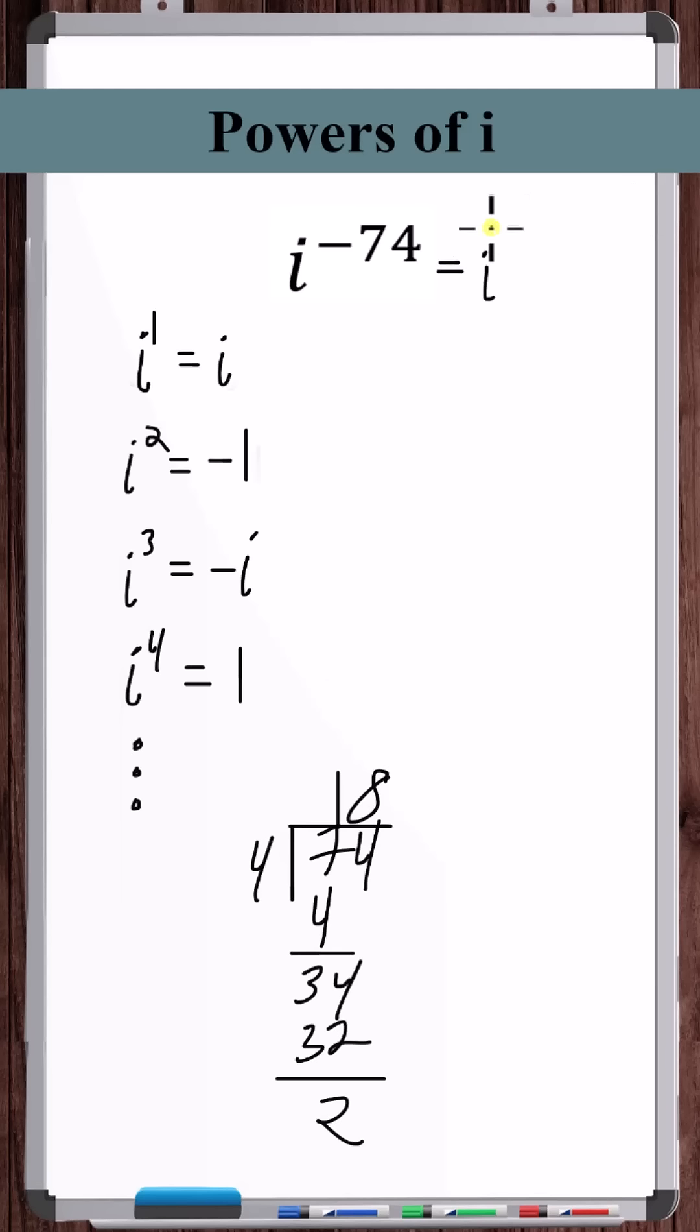So we want to write this as i to the minus 76 times i squared. 76 is divisible by four, so this is equal to one.